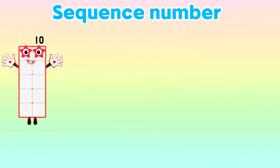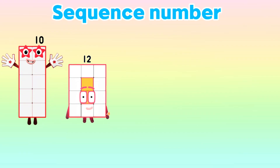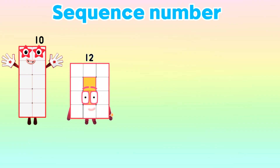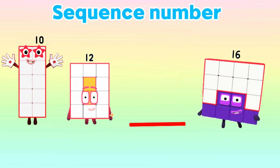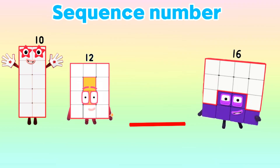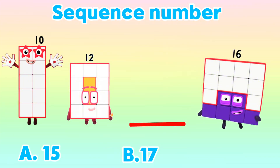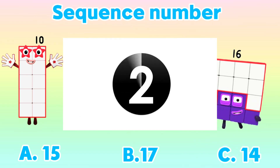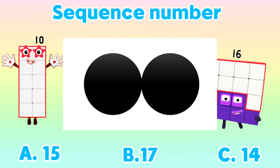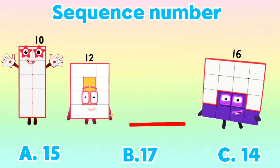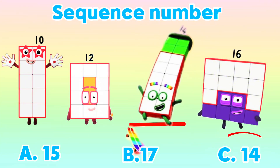Next question. 10, 12, blank, 16. What is the correct answer? Is it letter A: 15? B: 17? Or C: 14? And the correct answer is letter C: 14.